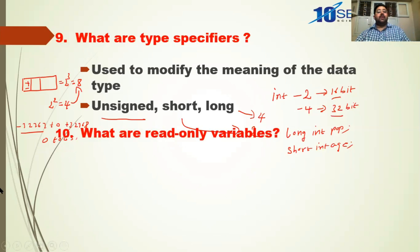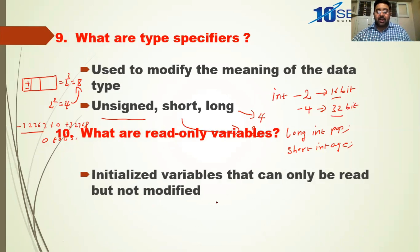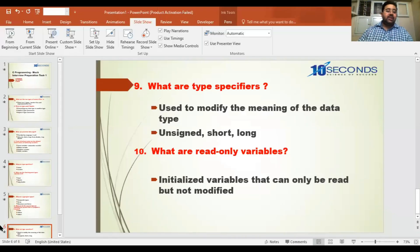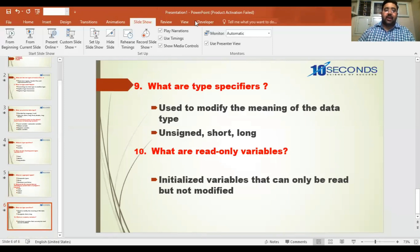What are read-only variables? Read-only variables are initialized variables that can only be read but not modified. For example, const int a = 10 — you cannot modify the value of a in the program. The value of a will remain 10 throughout. Thank you.